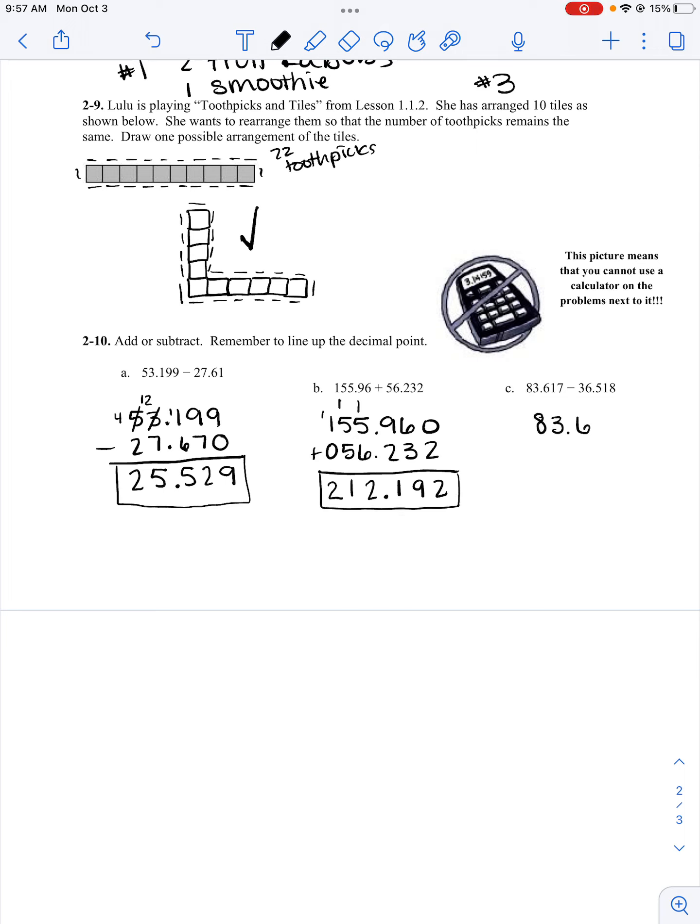Part C, I'm subtracting again. I'm always lining up my decimal points. Seven minus eight, I can't do that. I have to borrow a ten. Seventeen minus eight is nine. I have to borrow. Ten minus one is nine. Five minus five is zero. Drop my decimal point down. Three minus six, I have to borrow. Thirteen minus six is seven. And seven minus three is four.